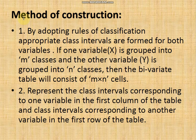Let us look at the method of construction of a bivariate distribution. By adopting the rules of classification, appropriate class intervals are formed for both variables. If one variable is grouped into m classes and the other into n classes, then the bivariate table consists of m × n cells.